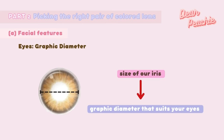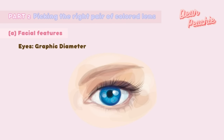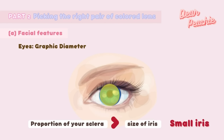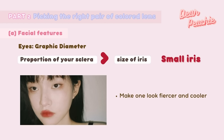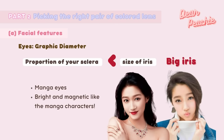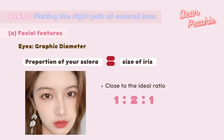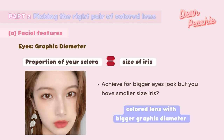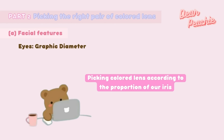The right graphic diameter also depends on your iris size. If the total proportion of your sclera is bigger than your iris, you have a smaller iris, which tends to make one look fiercer and cooler. If the iris is bigger than the sclera — sometimes called 'manga eyes' by the Chinese — you have a larger iris. When both are similar in proportion, you are close to the ideal ratio. If you want bigger-looking eyes but have a smaller iris, go for colored lenses with a bigger graphic diameter.